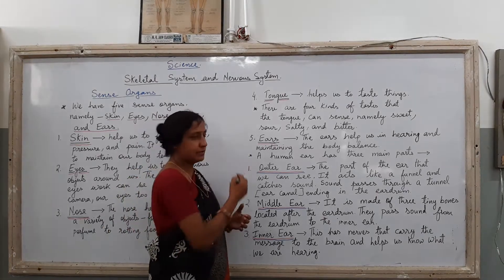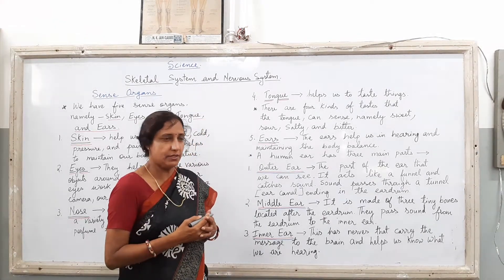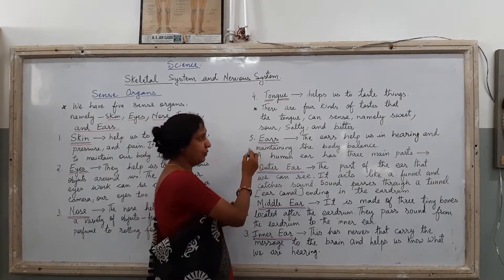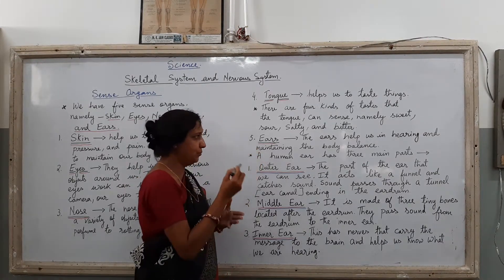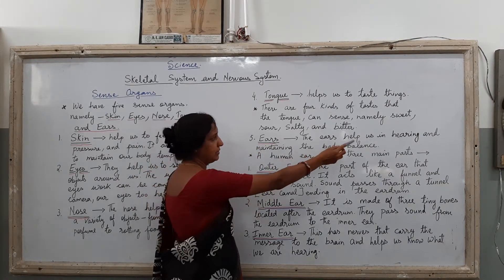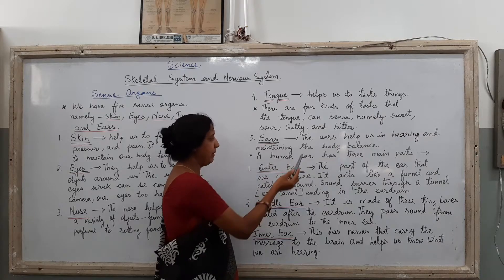Now, the next sense organ is the ears. Let us know what the ear does. The ears help us in hearing and maintaining the body balance.